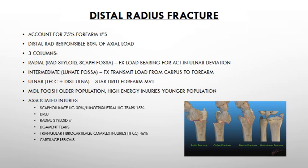Each one of these three columns is crucial and has a function. The radial side is your load bearing and acts especially for activities done while your wrist is in ulnar deviation. The intermediate column transmits load from the carpus to the forearm. The ulnar side stabilizes your distal radius-ulnar joint when your forearm moves, for instance with pronation and supination movements.